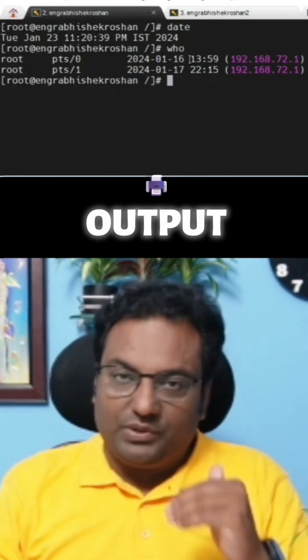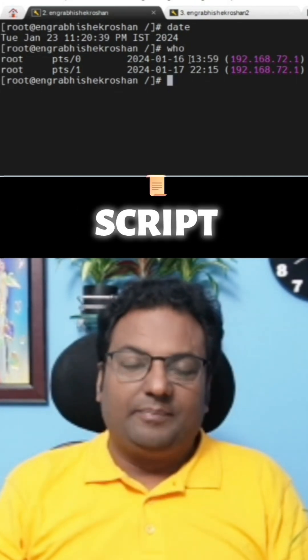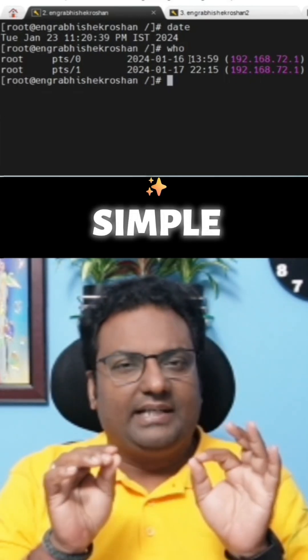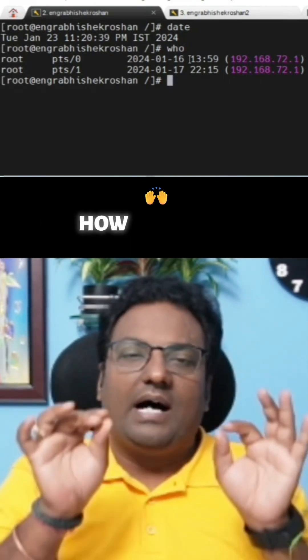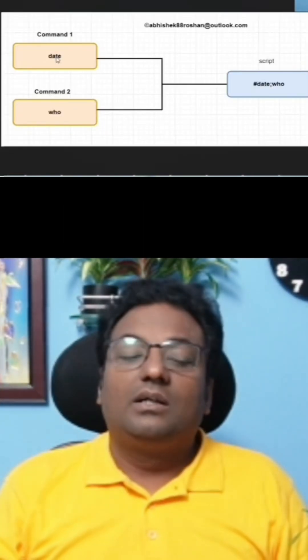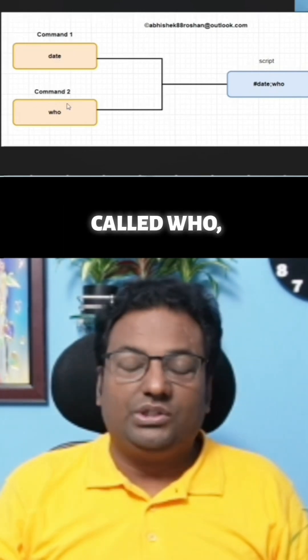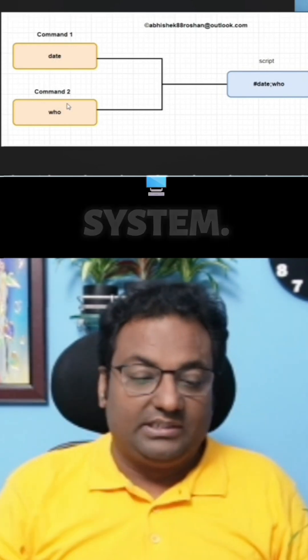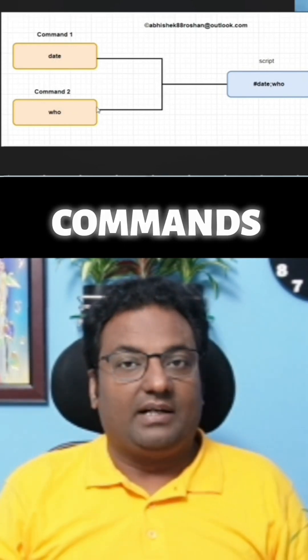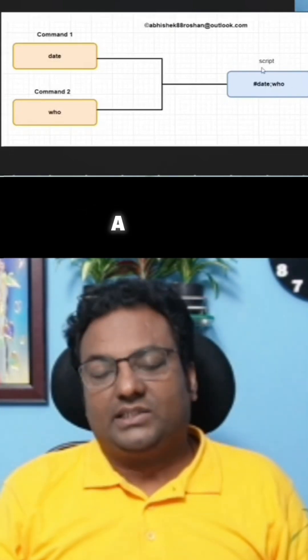What exactly does a shell script do? A shell script is simply a collection of commands — there is no rocket science here. As shown in the diagram, when you run `date` you get the date, and when you run `who` you get who has logged in. When you combine these two commands using a semicolon, you are creating a script.